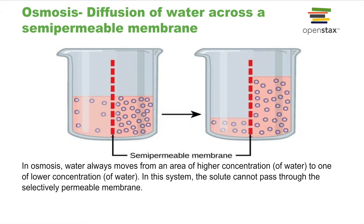The round purple shapes represent solute, and the pink area represents the solvent, which in our case is water. So in osmosis, water moves from an area of high concentration of water, because it is a molecule, to one of low concentration of water.